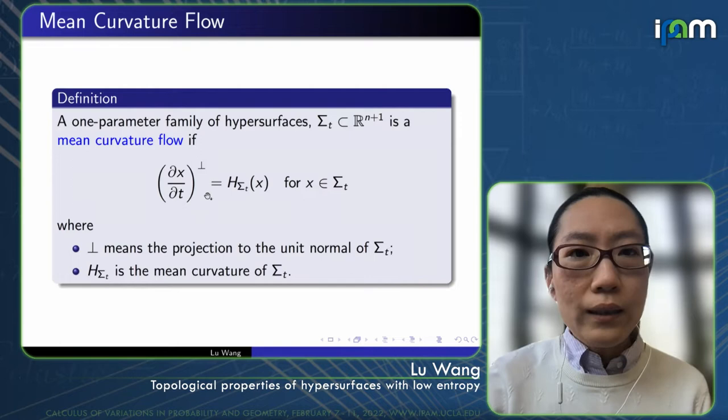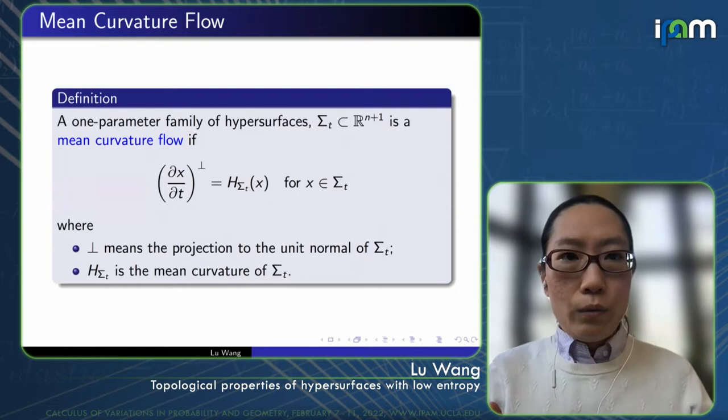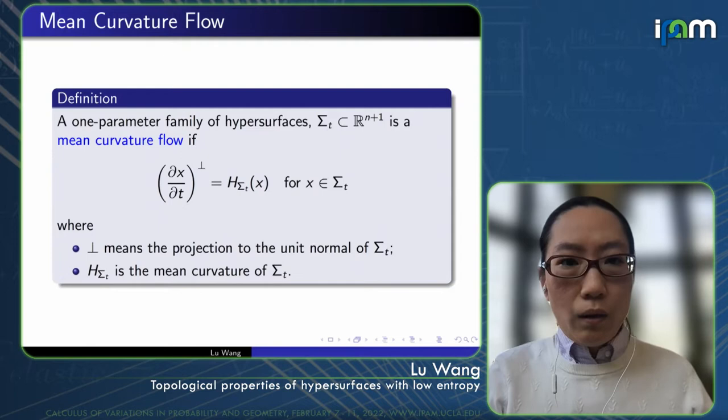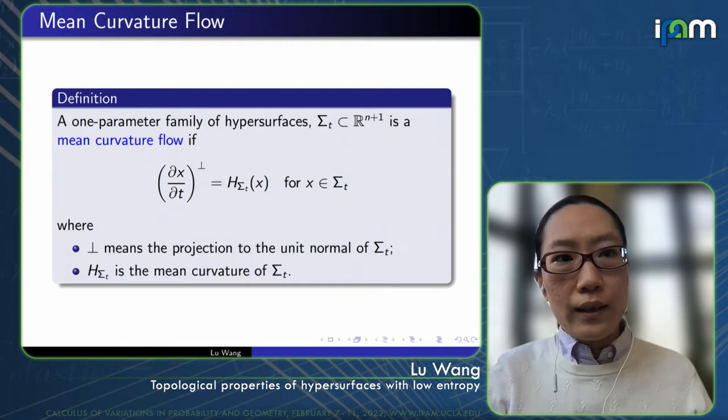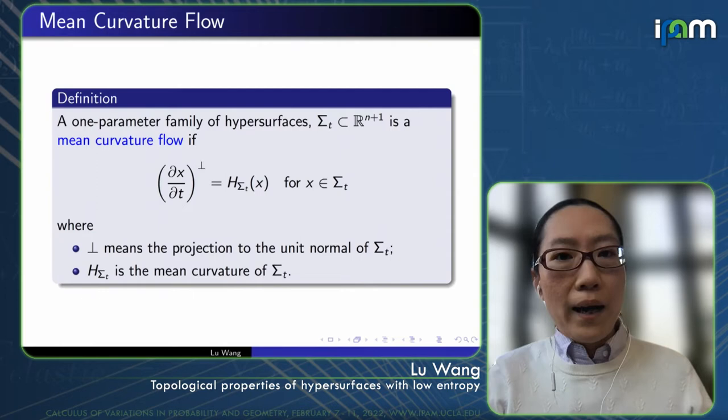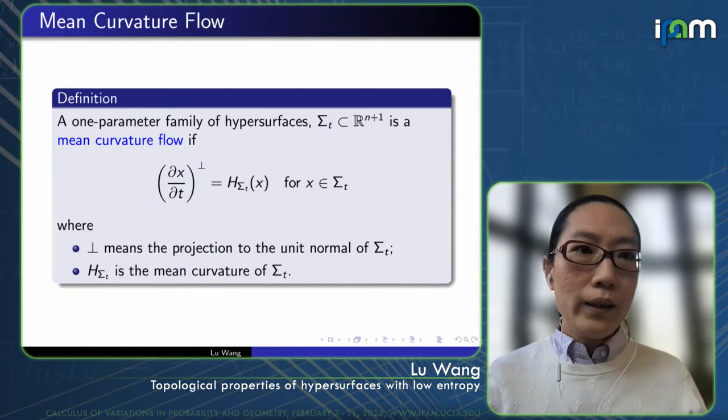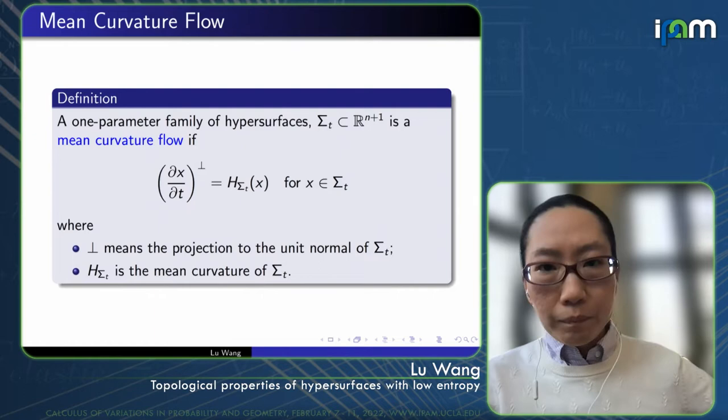One typical example is a round sphere in Euclidean space, whose mean curvature is given by a vector pointing towards the center of the sphere, with magnitude equal to n divided by the radius of the sphere. It will self-similarly shrink under the flow to its center in finite time.